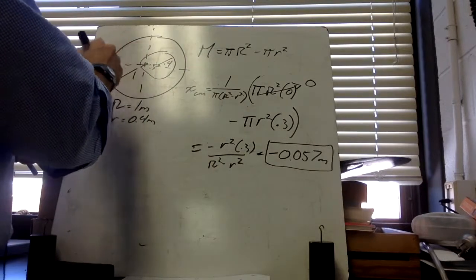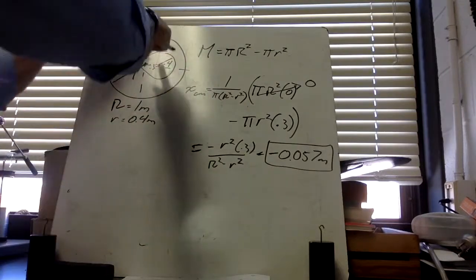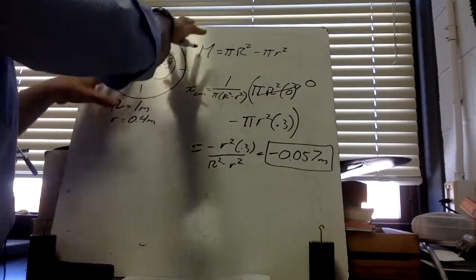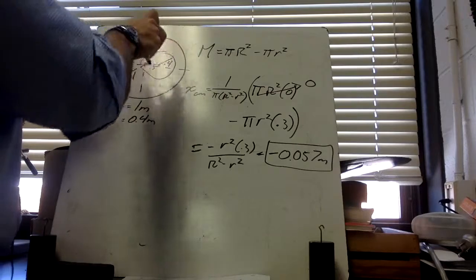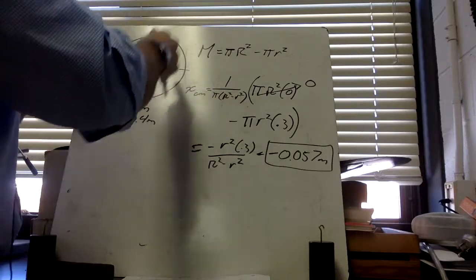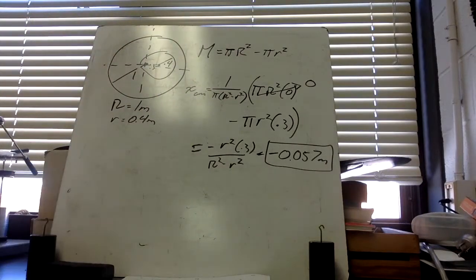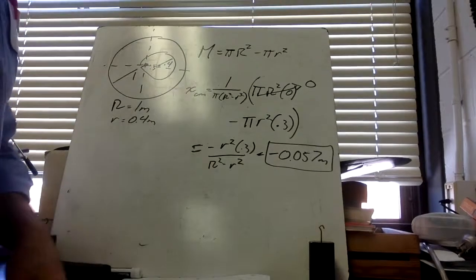So the center of mass is about 0.057 meters to the left of center. That makes physical sense: without the hole the object is symmetric, but removing mass from the right side shifts the center of mass to the left. That's it for lesson one — I look forward to seeing you on day one of school.